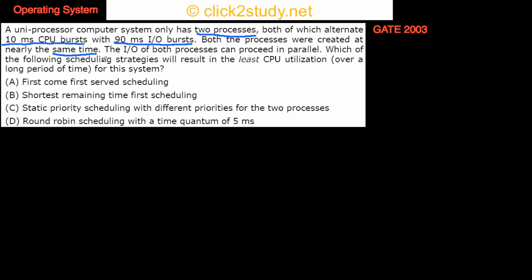Which of the following scheduling strategies will result in least CPU utilization over a long period of time? We have first come first serve, shortest remaining time, and static priority scheduling. We'll look at all of these one by one and see what happens.